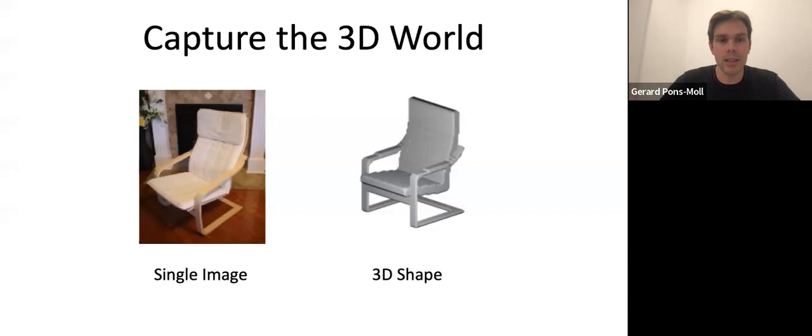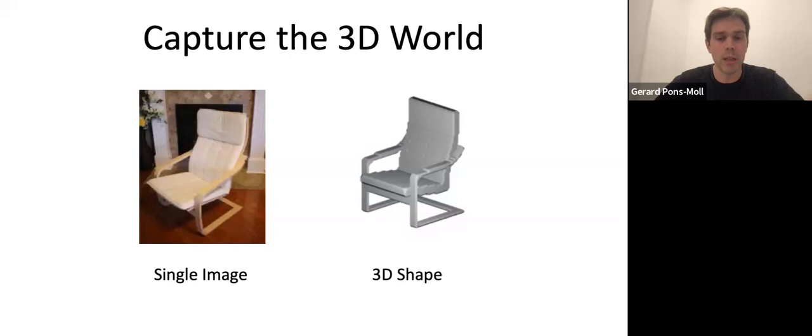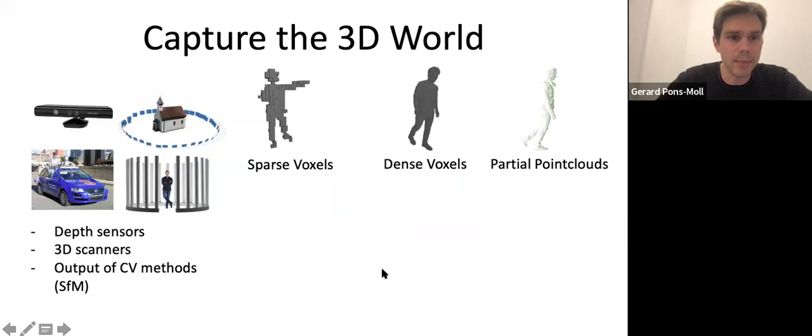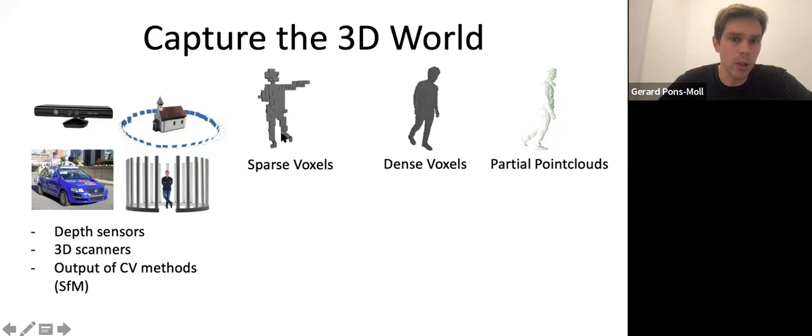For example, reconstructing 3D representations from visual input — in the easiest case, from a single image reconstruct the 3D representation. But depending on the visual input, you might have many different kinds of input data, for example, depending on whether you're using depth sensors, scanners, or LiDAR. Basically it could be an intermediate step of a computer vision algorithm — you will have input that is sparse voxels, dense voxels, or partial point clouds, for example from depth images.